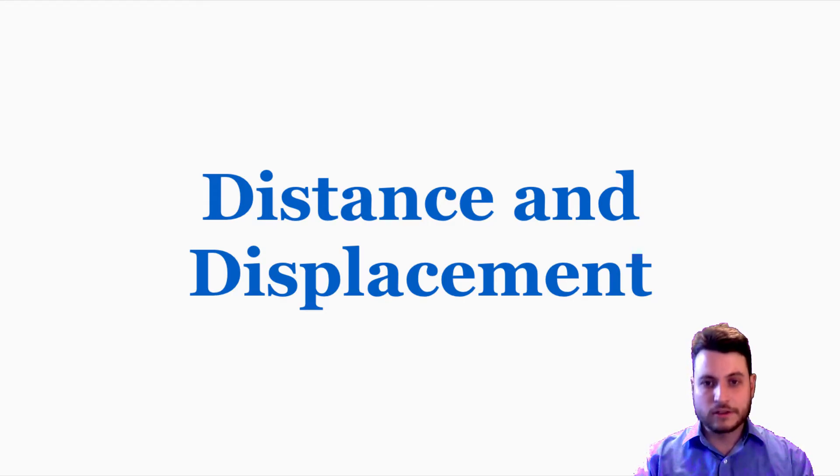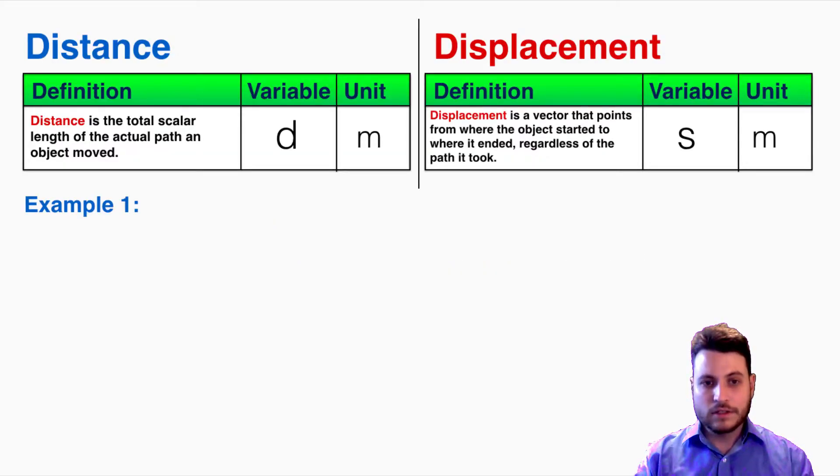This video is about distance and displacement. Distance is the total scalar length of the actual path that an object moved. The variable we use is d and the unit is m for meters, whereas displacement is a vector that points from where the object started to where it ended regardless of the specific path it took. In IB physics we use the variable s for displacement and the unit is also meters.